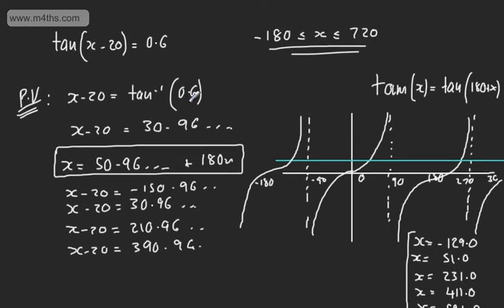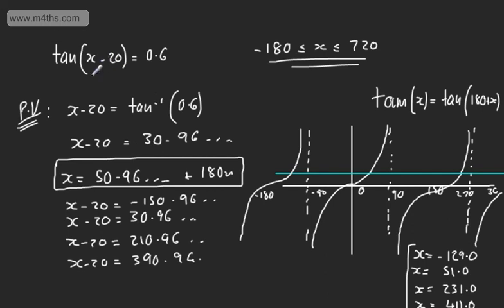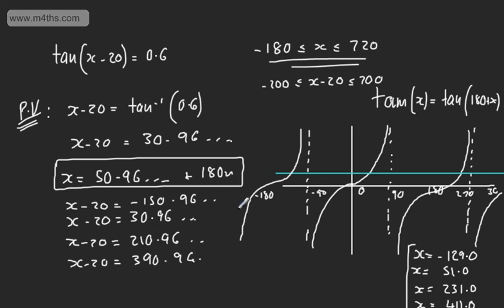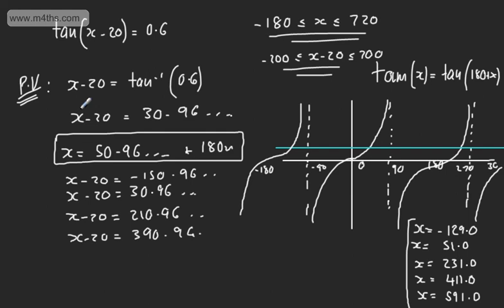That's solving for a compound angle when the coefficient on the term in x or theta is just 1. In later videos, we will look at when it isn't, and how we deal with that. Hopefully that's given you an idea: you solve for the principal value, then consider subsequent solutions however you might want to do it — whether you change the interval or list out multiples. Lots of different approaches, so play around with a few methods until you're comfortable.